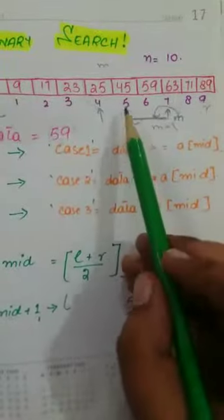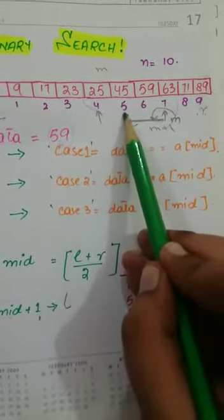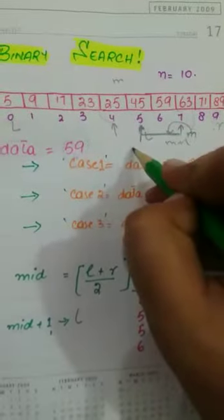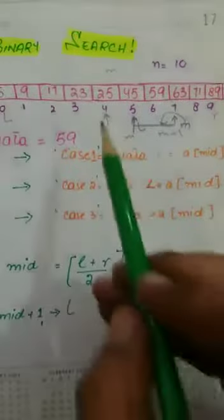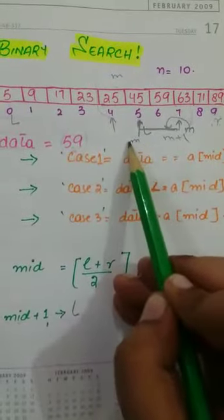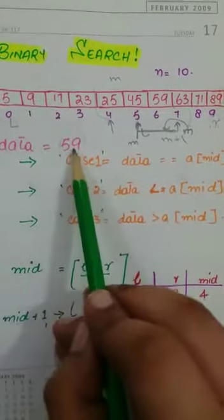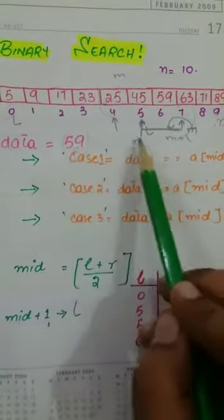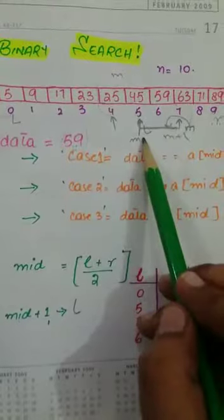Okay. Now what we have to do? We have to go back to the mid position. Since we compare 45 to 59, obviously what is greater.